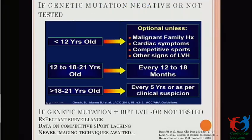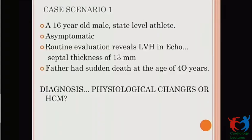This chart shows the recommended frequency of family screening. If a patient has a negative genetic mutation or mutation not detected, for those under 12 years, screening should start only if there is a malignant family history, cardiac symptoms, or engagement in competitive sports. Until age 21, screening every 12 to 18 months is recommended. After adulthood is reached, every five years is sufficient unless there are high-risk features requiring more frequent monitoring.